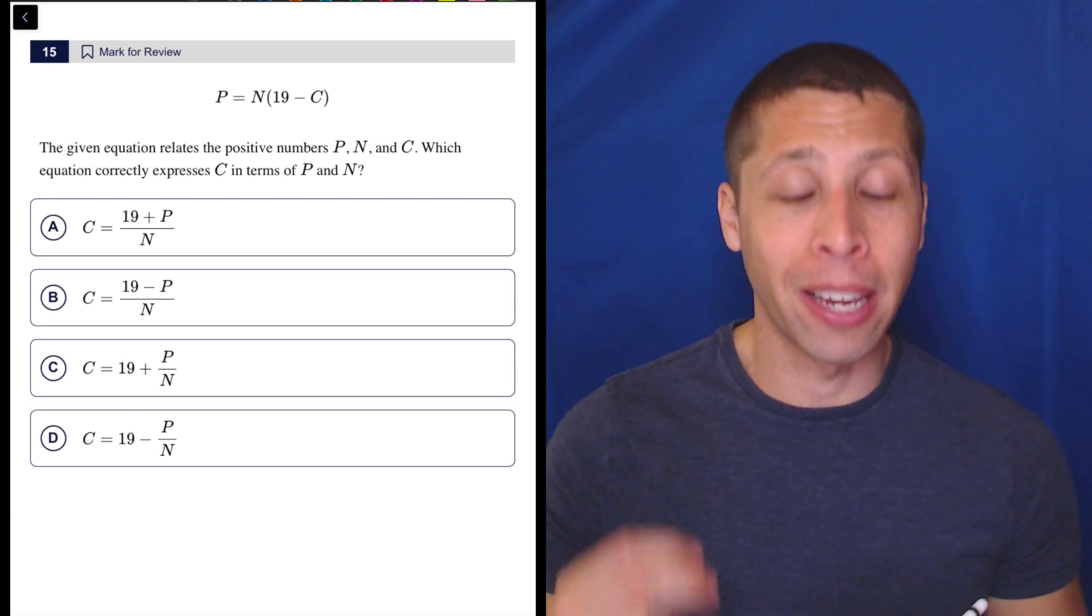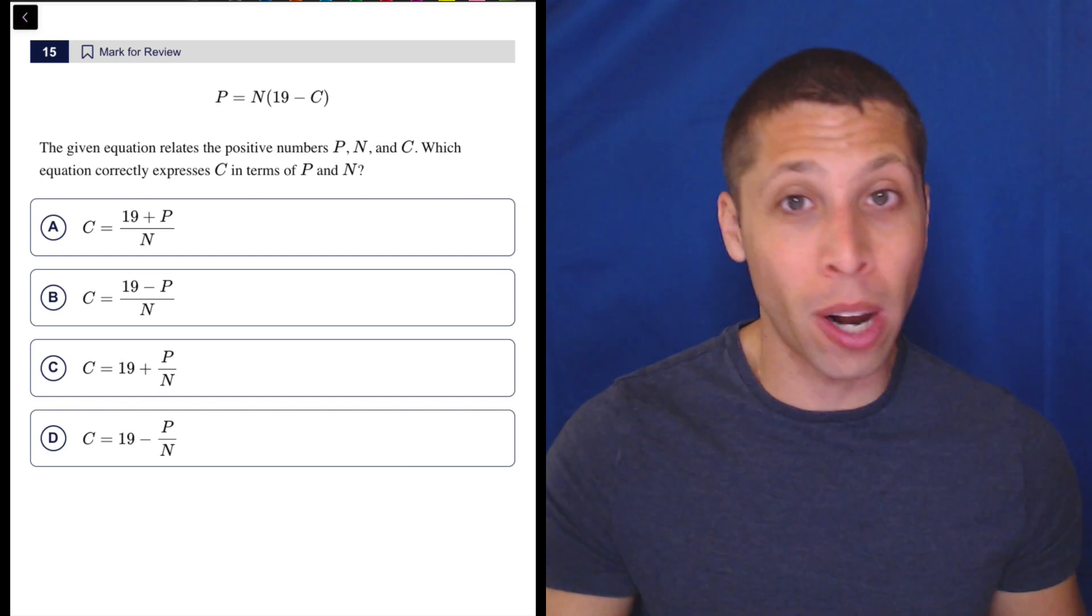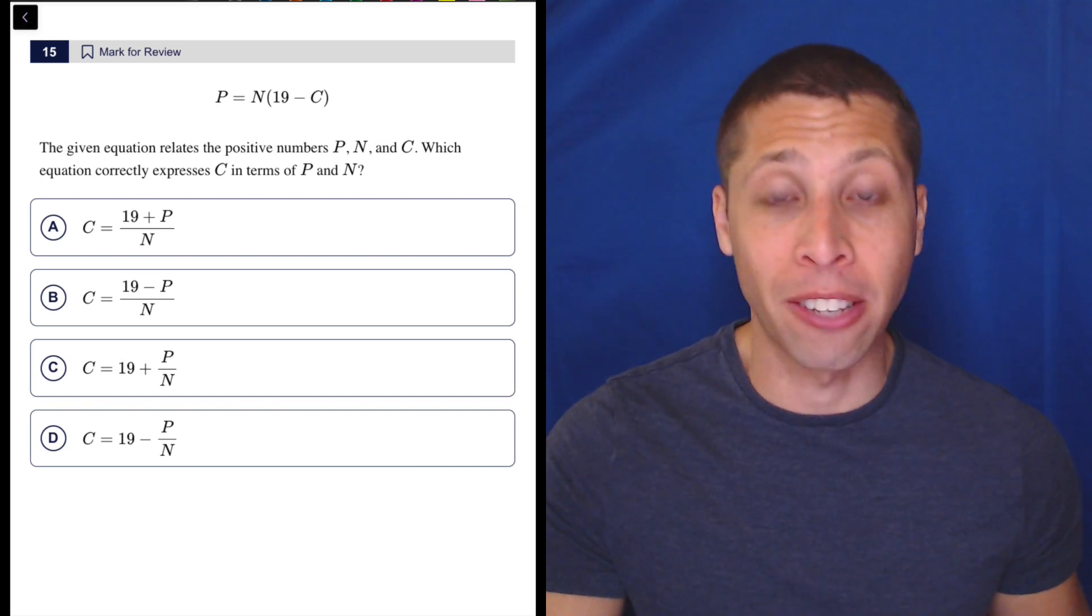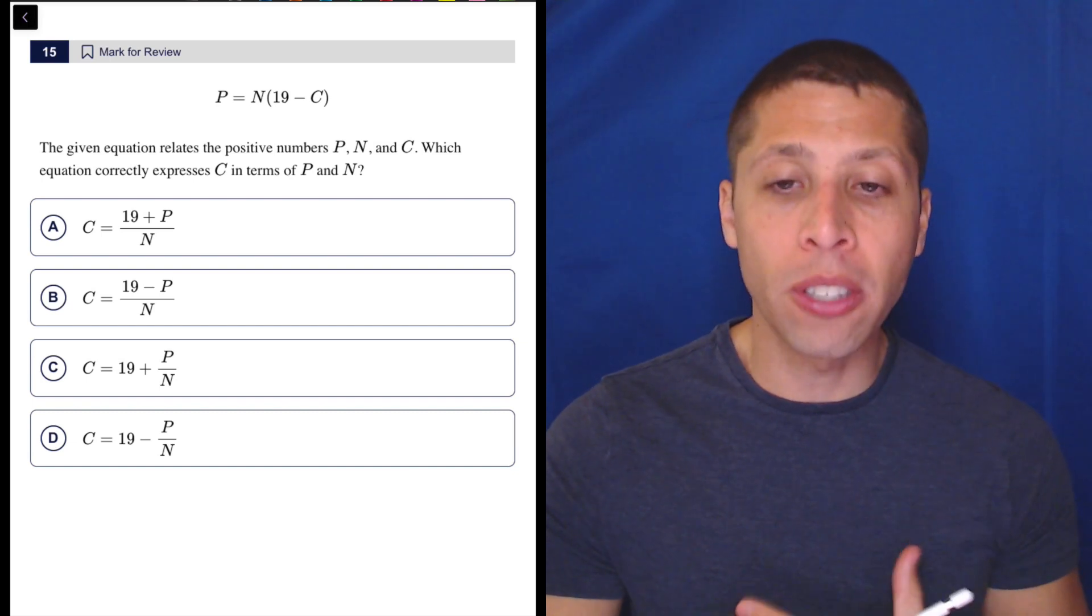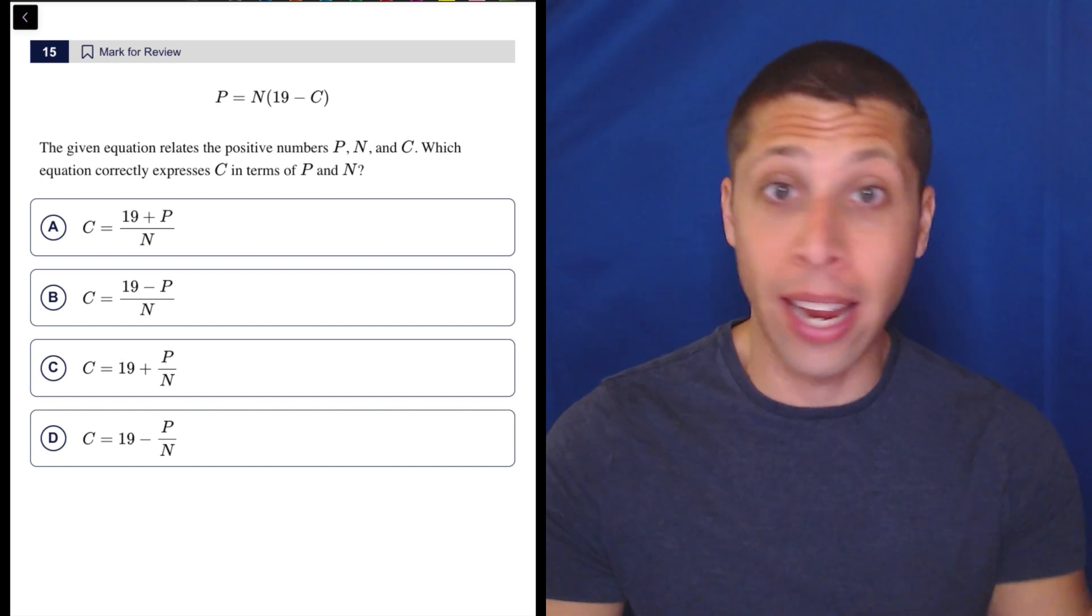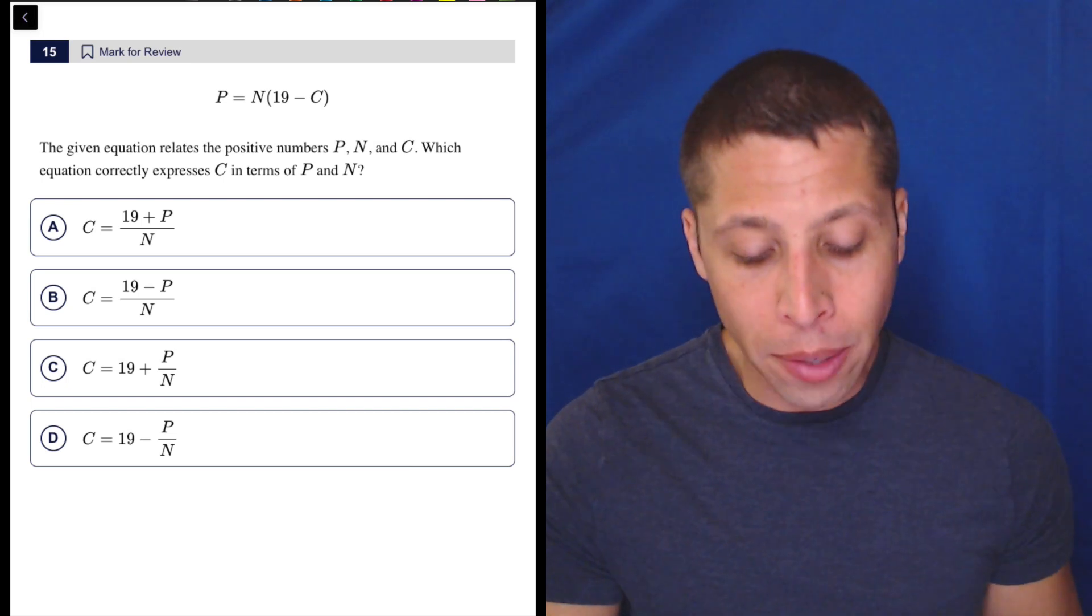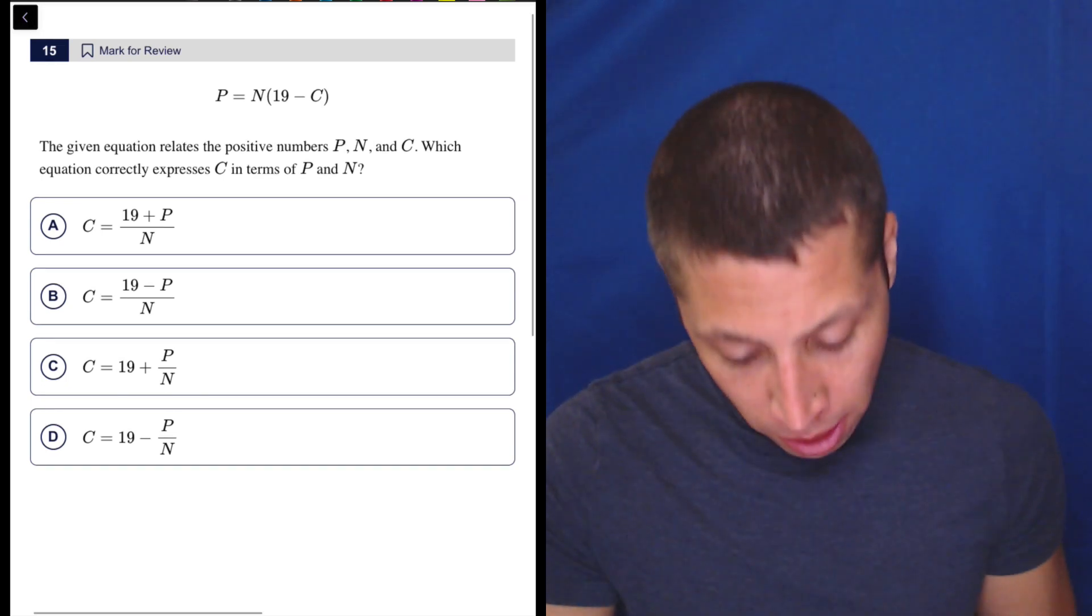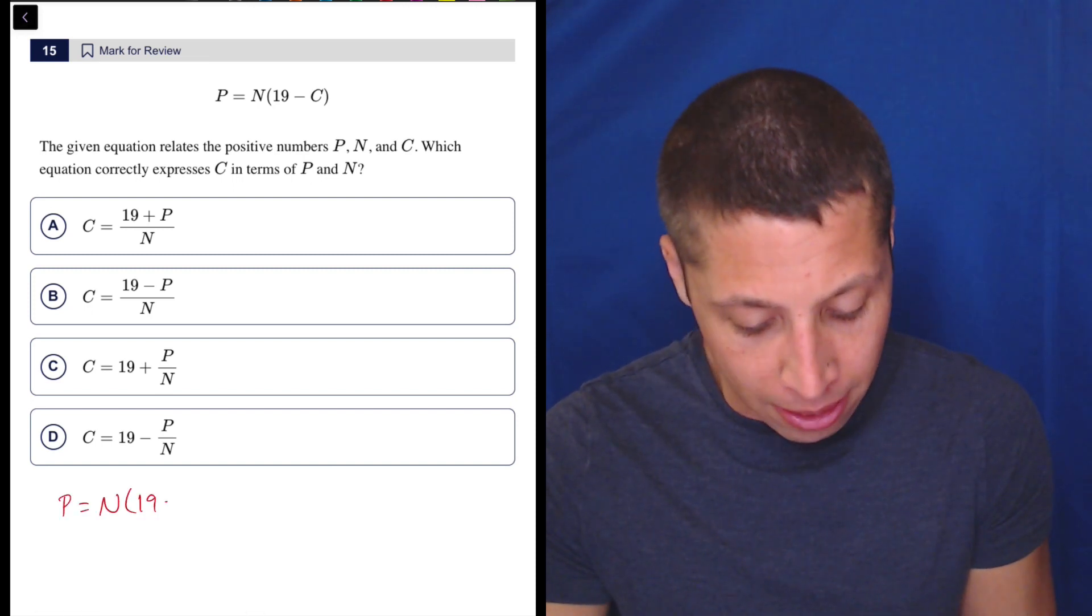It'll be a little bit more time consuming, but it's worth it to spend the time here and get this right rather than rush through everything and make too many mistakes. So if we're solving with algebra, we just need to know how to get C alone. The answer choices tell us to do that. So we would need to manipulate this equation. Let me write it down here first. So P is equal to N times 19 minus C.